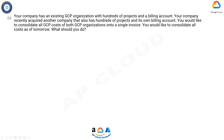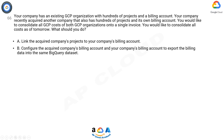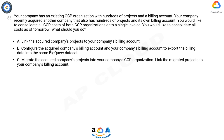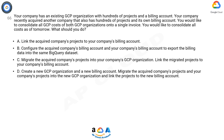Option A: Link the acquired company's projects to your company's billing account. Option B: Configure the acquired company's billing account and your company's billing account to export the billing data into the same BigQuery dataset. Option C: Migrate the acquired company's projects into your company's GCP organization, then link the migrated projects to your company's billing account. Option D: Create a new GCP organization and a new billing account, migrate both companies' projects into the new GCP organization, and link the projects to the new billing account.